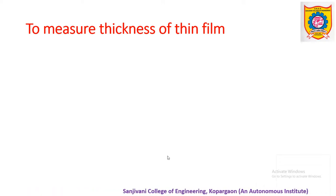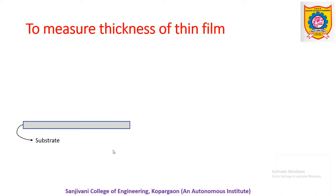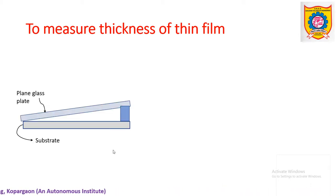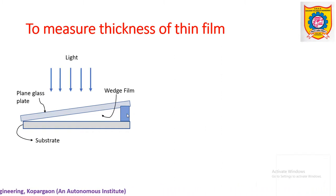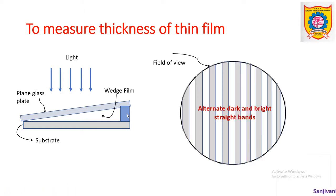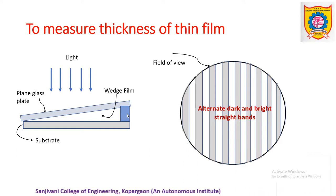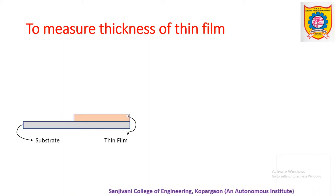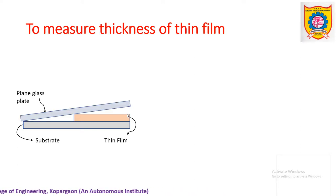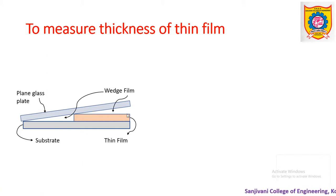Using the interferometry concept, it is possible. We know that if we consider a substrate and a plain glass plate is placed on it — using a piece of paper or a very thin wire — it creates a wedge film. This wedge film can be illuminated by a monochromatic beam of light, producing alternate bright and dark straight bands which are equally spaced. The same technique can be used to measure the thickness of a thin film. Imagine a thin film deposited on a substrate; a plain glass plate is placed on top, creating a wedge film. In this case, two wedge films are created because of the deposited thin film.